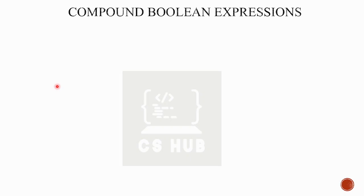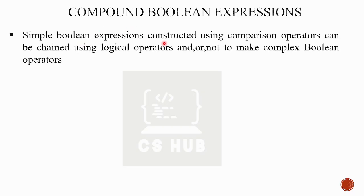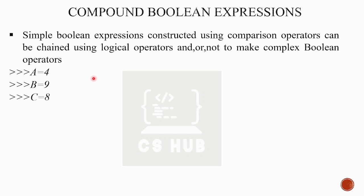Next is compound boolean expression. We can combine simple boolean expressions using logical operators: and, or, not. Simple boolean expressions constructed using comparison operators can be chained using logical operators and, or, not to make complex boolean expressions. For example, suppose a = 4, b = 9, c = 8.